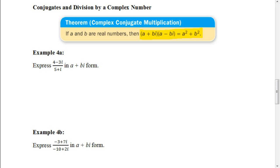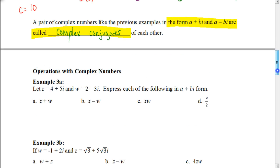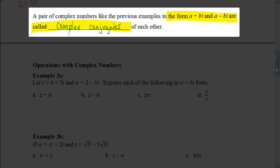But in order for us to be able to do that, I want to go back to a point that we made in a previous video, and that's the idea of a complex conjugate. Remember, if we have something in the form A plus BI and A minus BI, those are what we call the complex conjugates of each other.